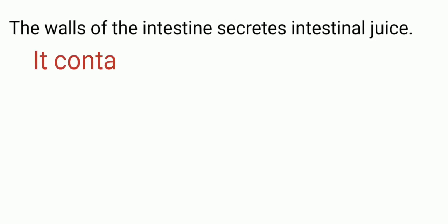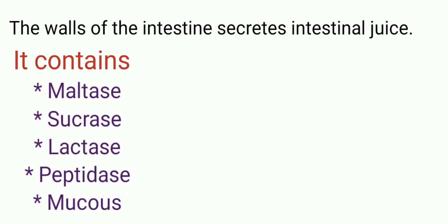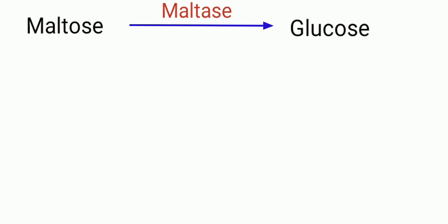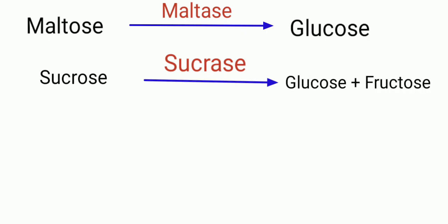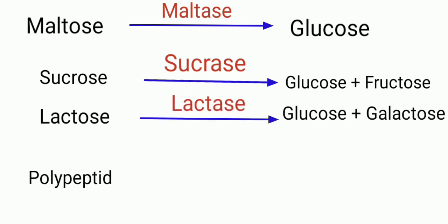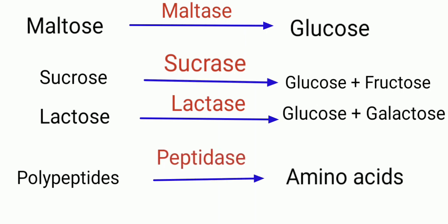The walls of the intestine secrete intestinal juice. It contains maltase, sucrase, lactase, peptidase, and mucus. Maltase acts on maltose and converts it into glucose. Sucrase converts sucrose into glucose and fructose. Lactase turns lactose into glucose and galactose. Peptidase converts polypeptides into amino acids. Mucus lubricates the food and helps it move along the digestive tract.